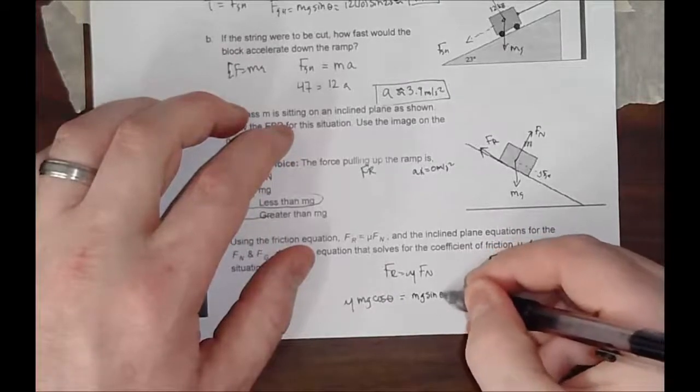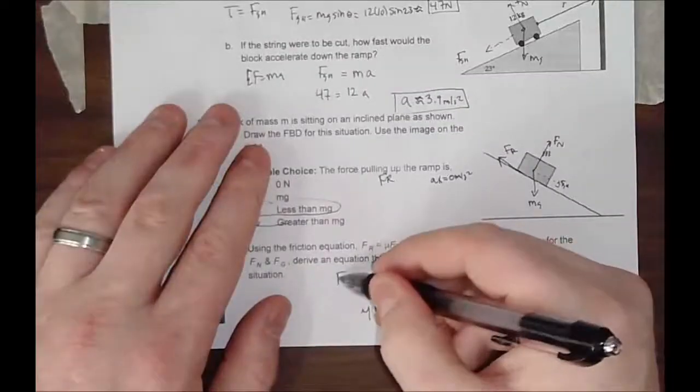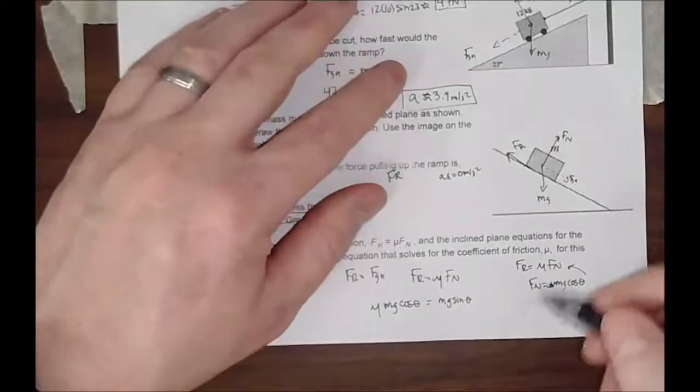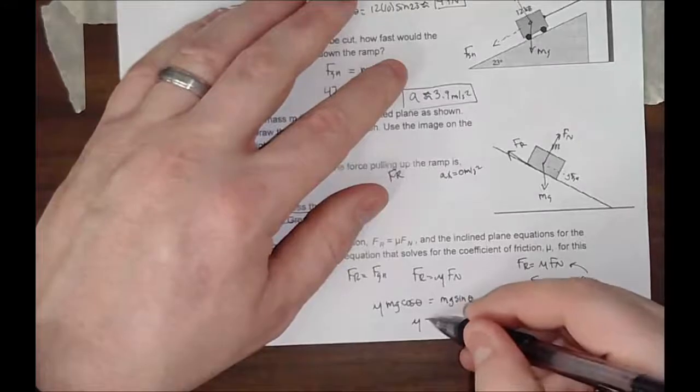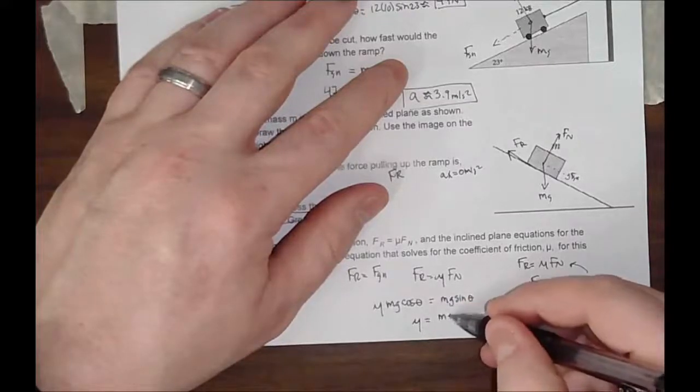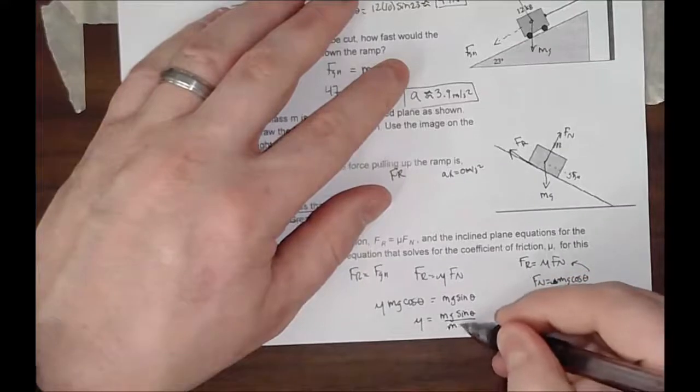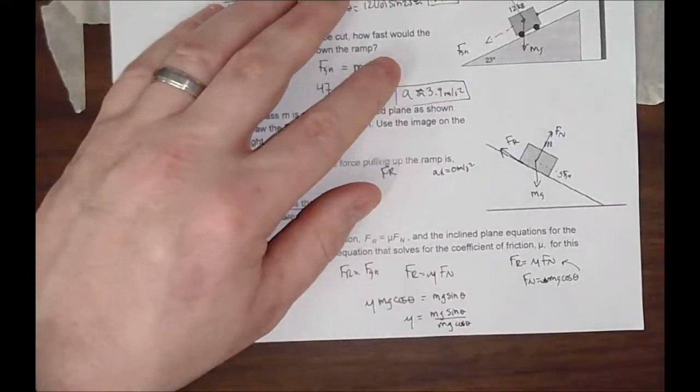In this case, we know that the frictional force pretty much has to be equal to the component of gravity pulling down the ramp. So now, mu is equal to mg sine of theta divided by mg cosine theta.